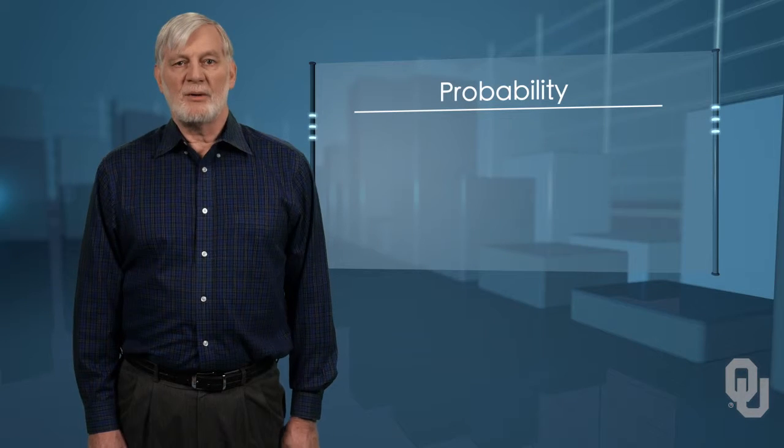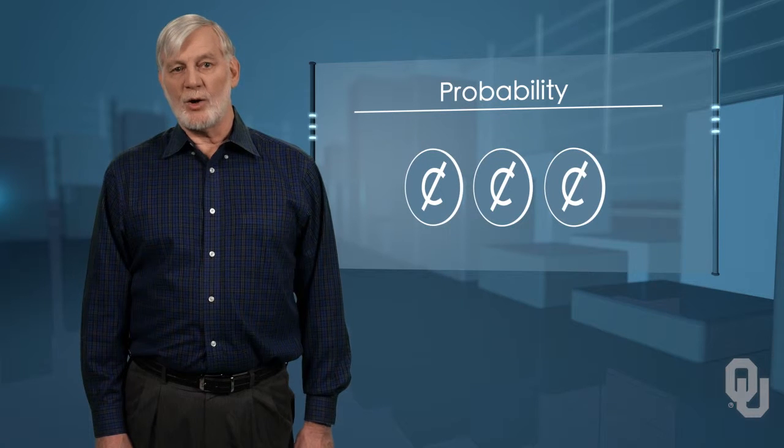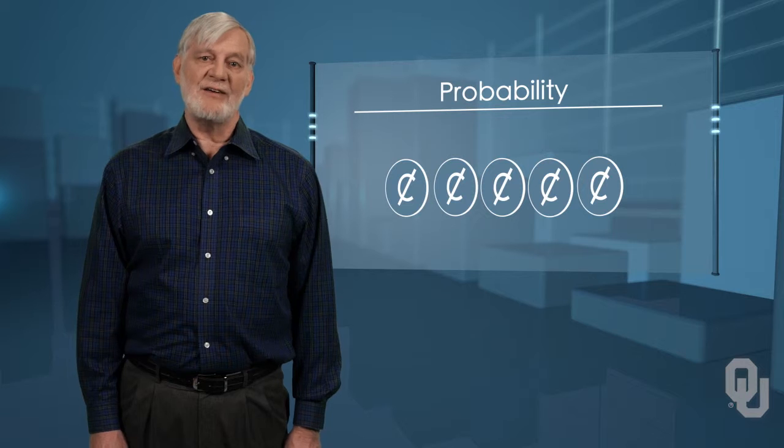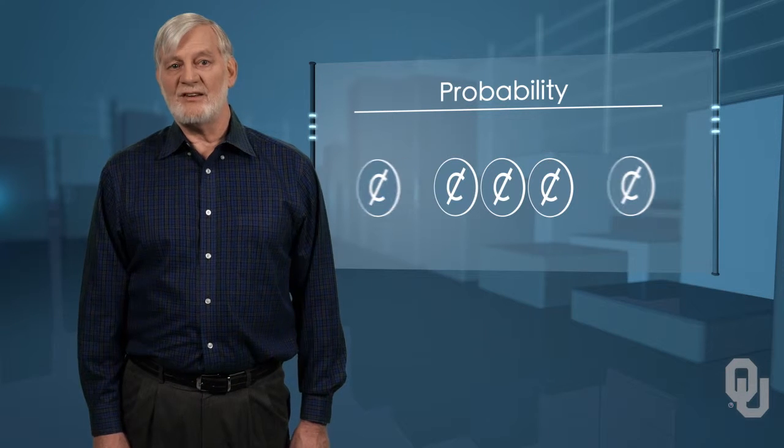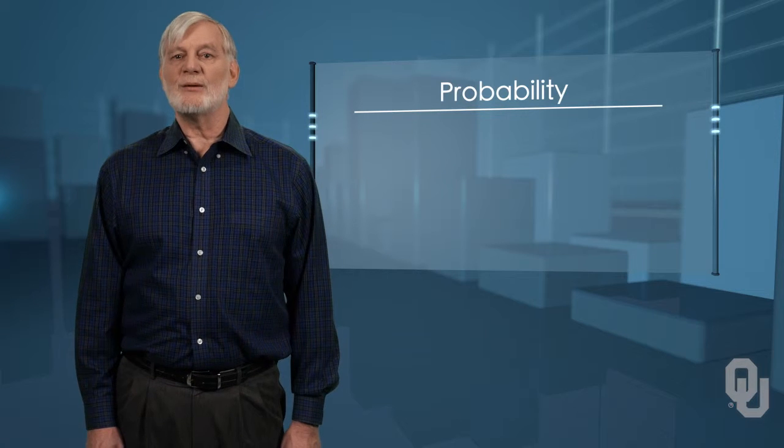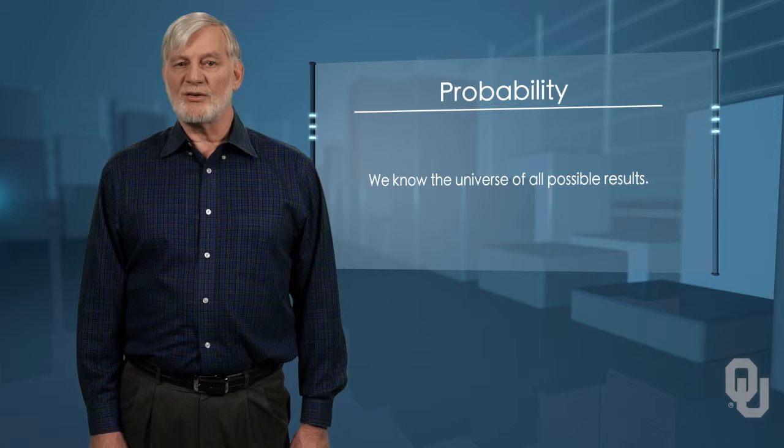I can now calculate probabilities for any configuration we may wish to examine. For example, the probability of getting a pair of aces in a five-card hand, or the probability of getting three heads in a row if we flip three coins, or perhaps the probability of getting five heads in a row, or just five heads in any order if I throw seven coins. Any combination we can imagine. We can do this because we know the universe of all possible results.